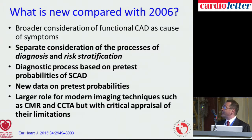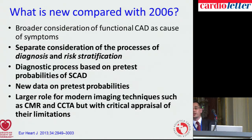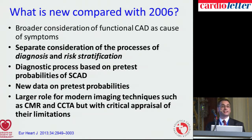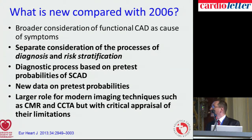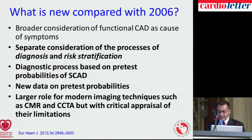The next new point is that the authors aim to base the guidelines on pretest probabilities of stable coronary artery disease. This is especially relevant for new data on pretest probabilities and new modalities used in the pathways for diagnosis and risk stratification. Last but not least, there is a large role for modern imaging techniques such as cardiac MRI and CT coronary angiography, but also a very critical appraisal of these new modalities in the guidelines.